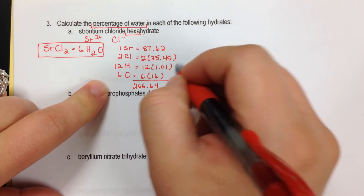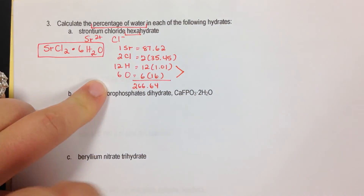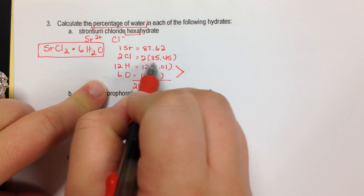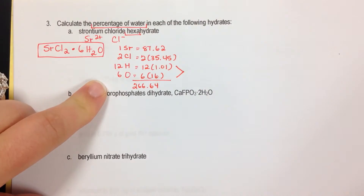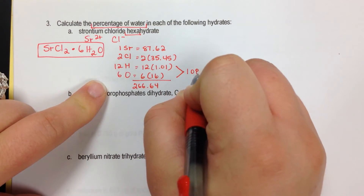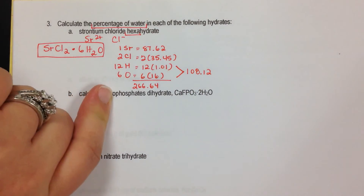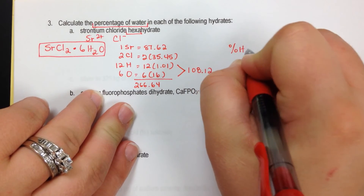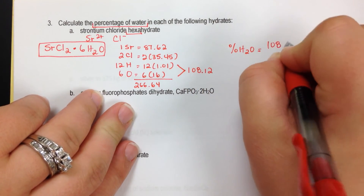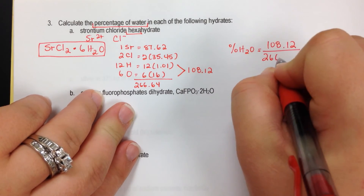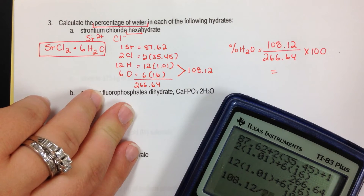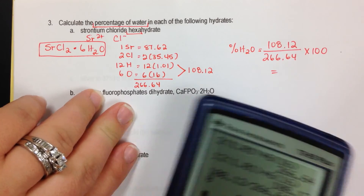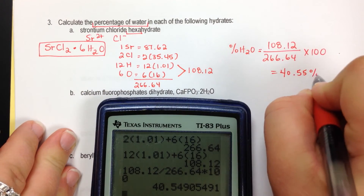When finding the percent of water, I need the total mass of just the water portion. With 12 hydrogens and 6 oxygens, that's 12 times 1.01 plus 6 times 16, which equals 108.12. So percent of water equals 108.12 divided by 266.64 times 100, which gives 40.55% water.